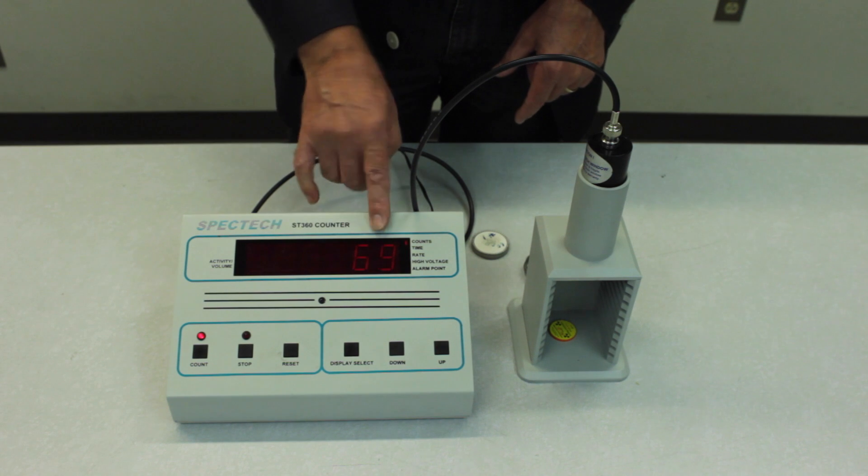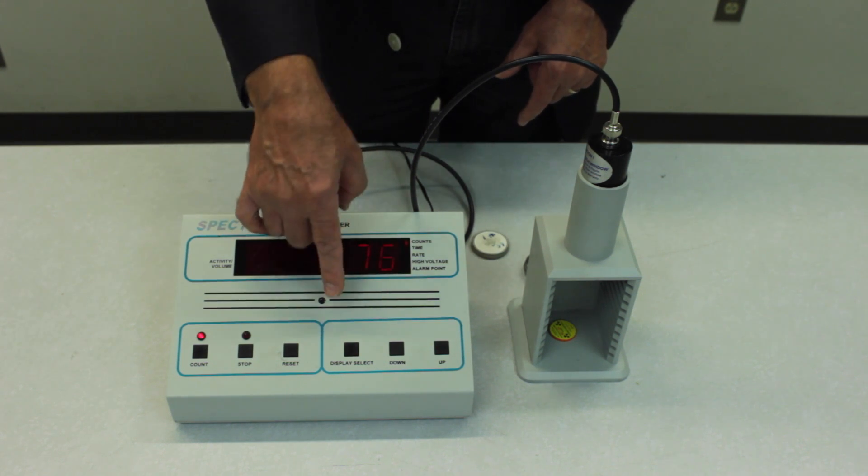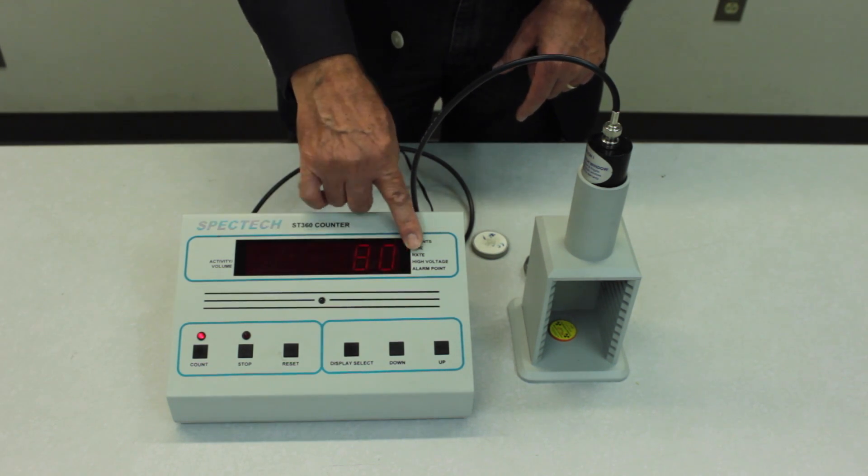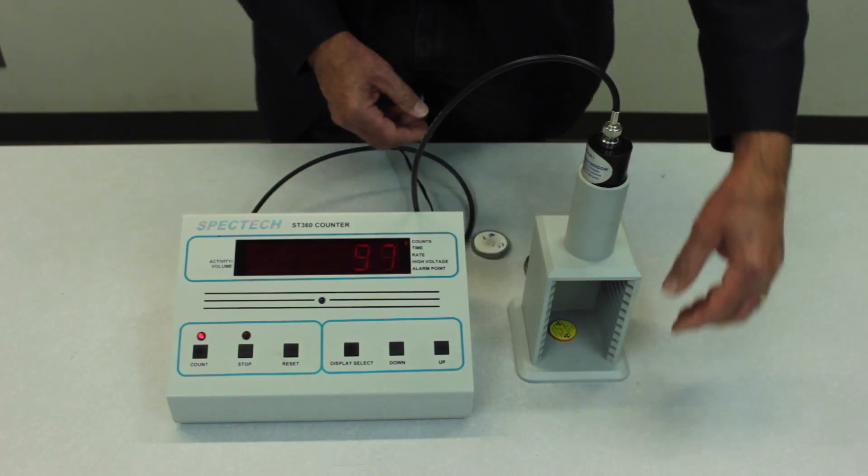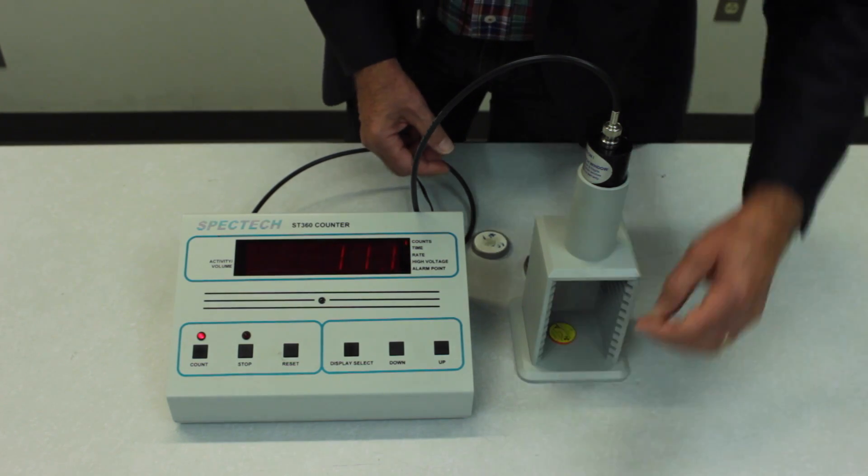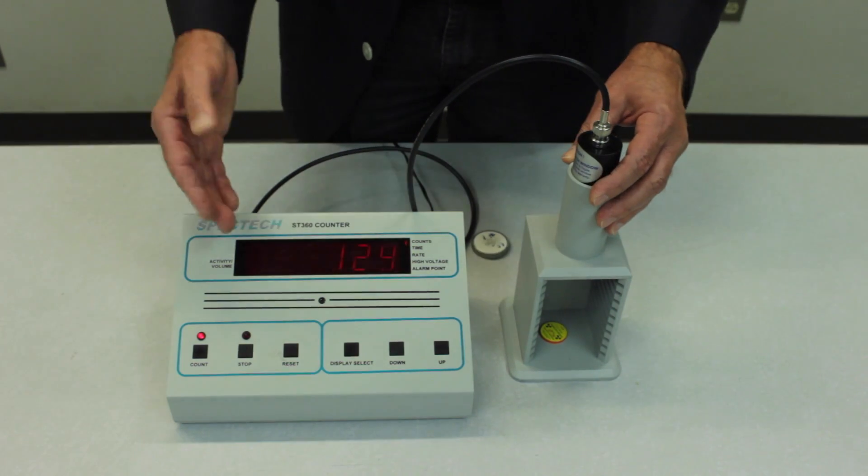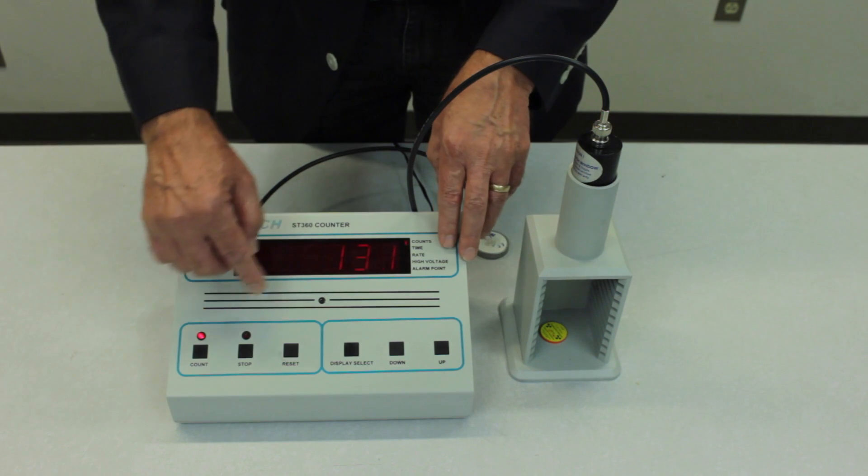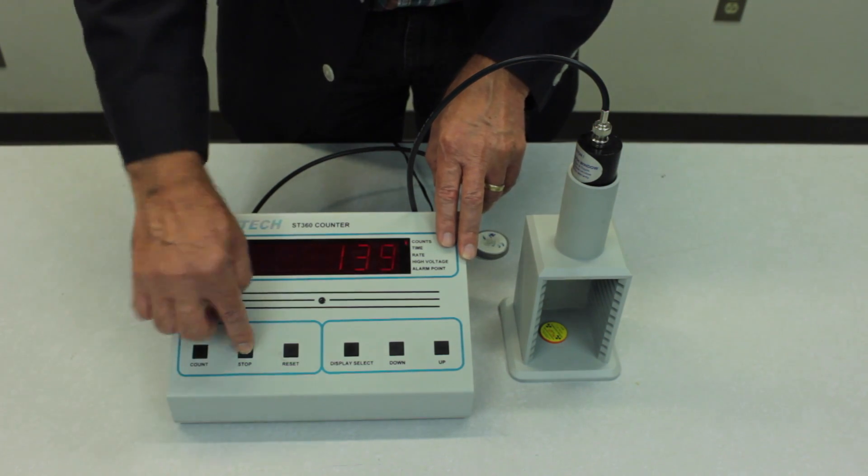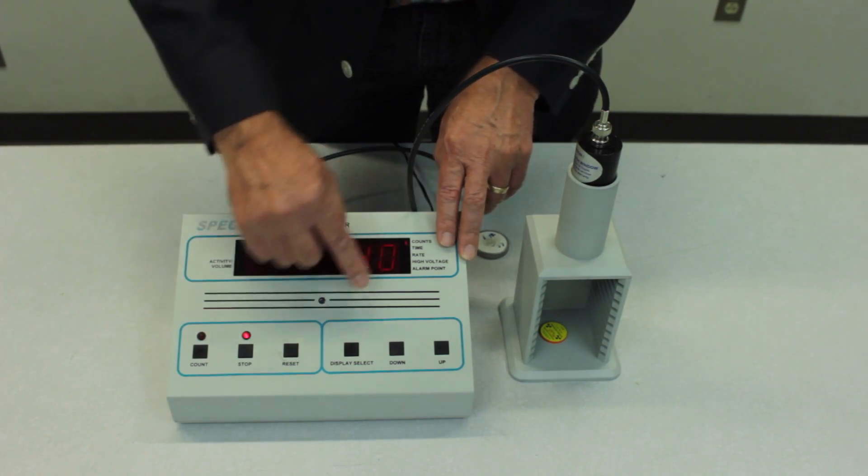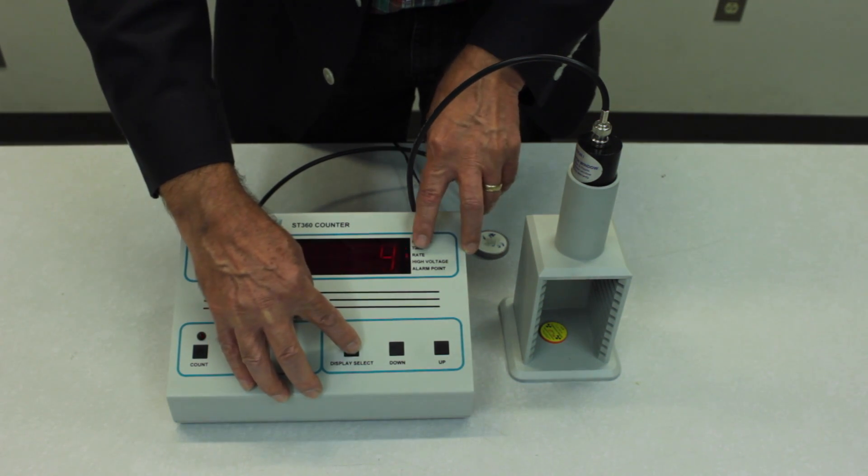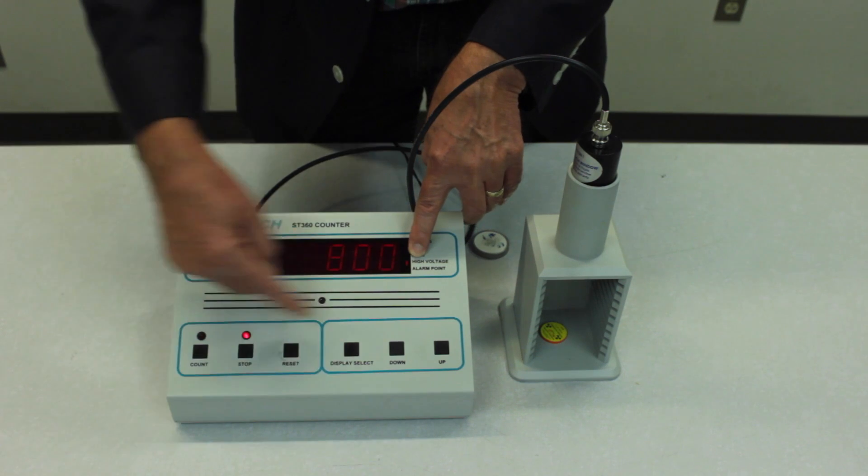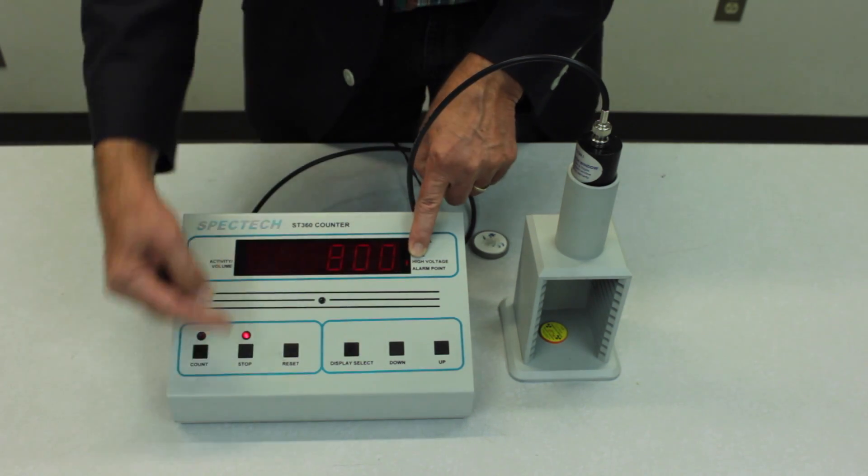So what you want to do is to adjust the voltage applied to the tube until you just begin to get some counts. And then increase in increments of twenty volts until you reach the breakdown region. So let me just stop this and go back to the display select function down to the high voltage. And I'm going to reduce this down to six hundred volts.